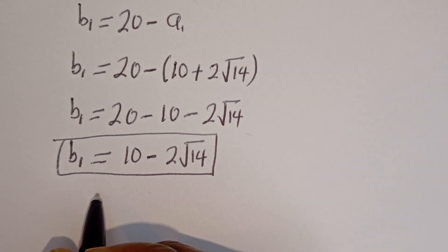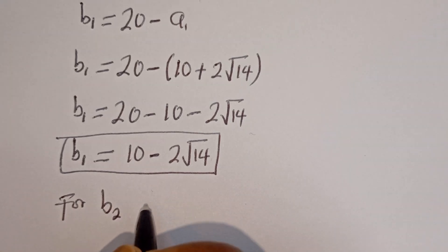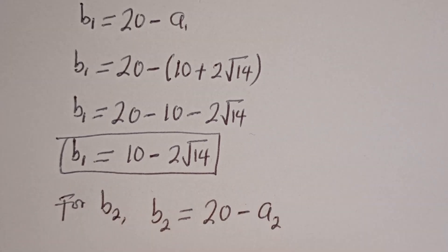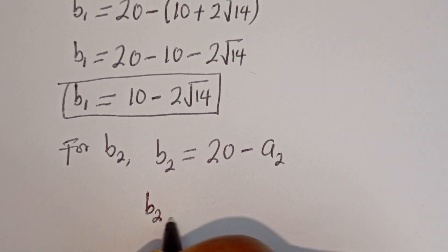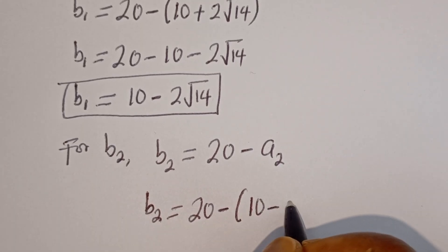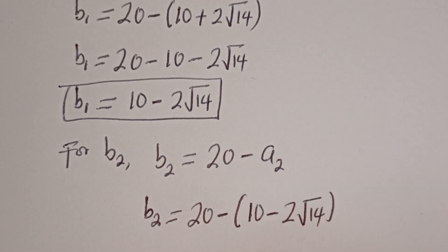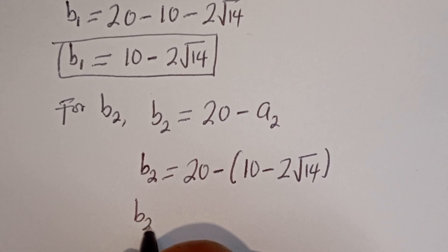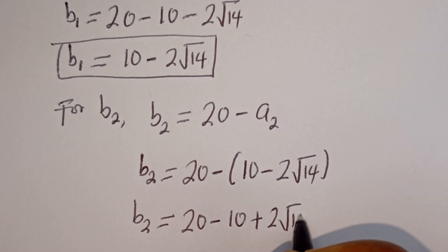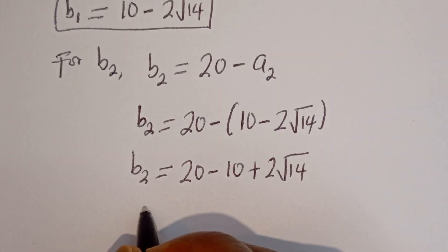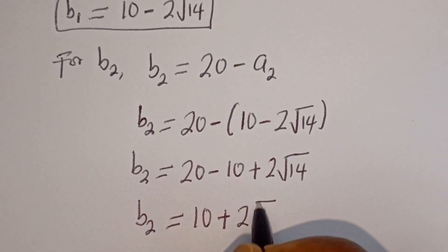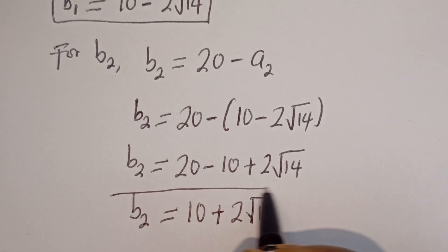Now to get b2: b2 is equal to 20 minus a2, which is 20 minus (10 minus 2 root 14), giving b2 is equal to 10 plus 2 root 14. This is the value of b2.